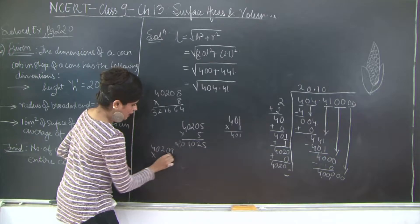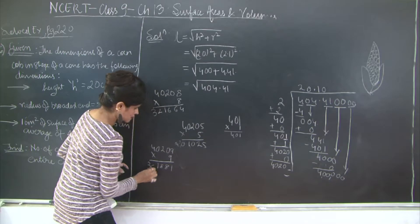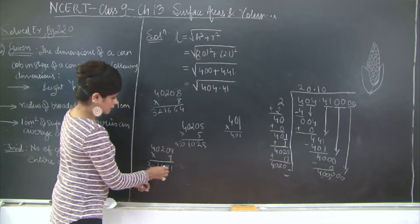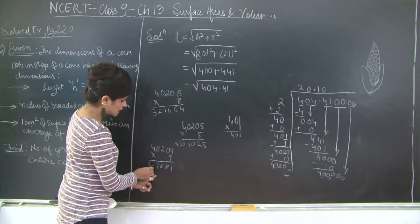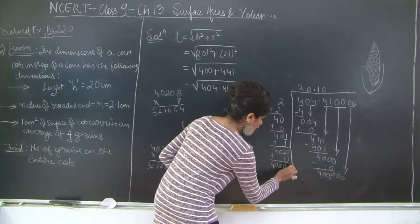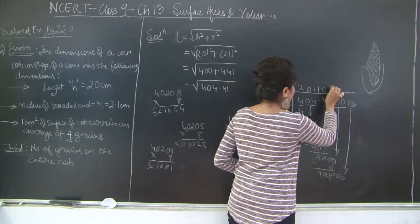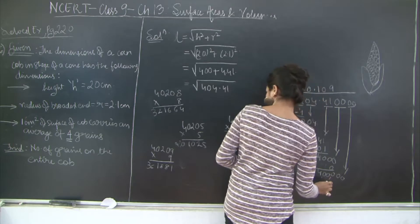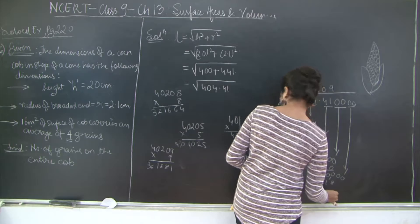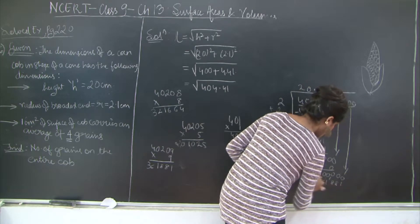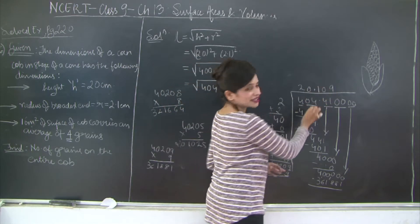40209 into 9: 9 nines are 81, 9 twos are 18, 9 fours are 36. So I think this should be 36. This is the largest number that you can take. So 361,881. And subtract and whatever value you get. So we just need 2 decimal places.